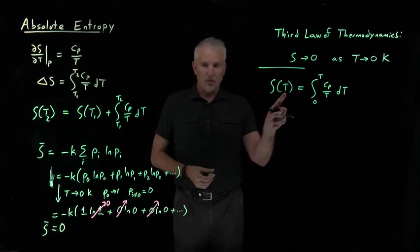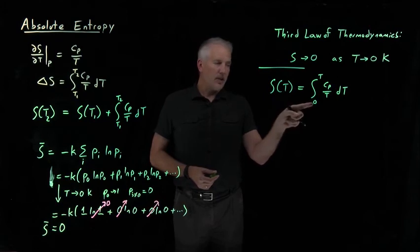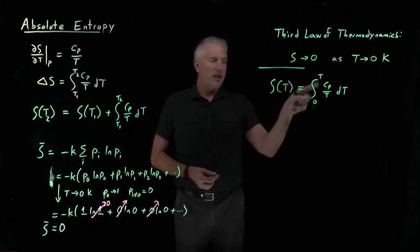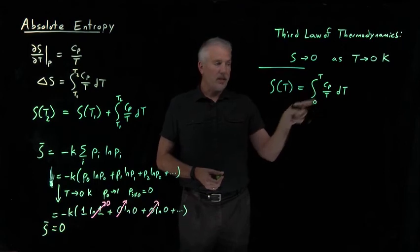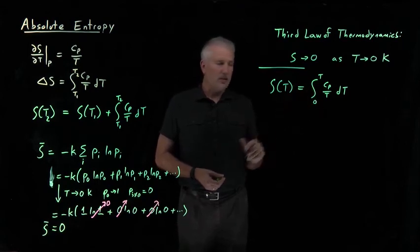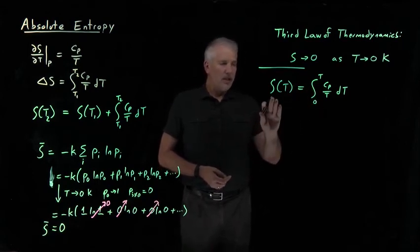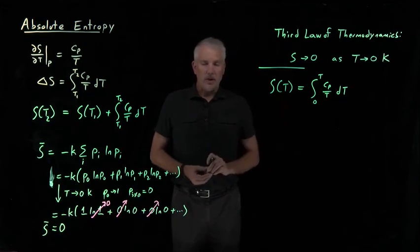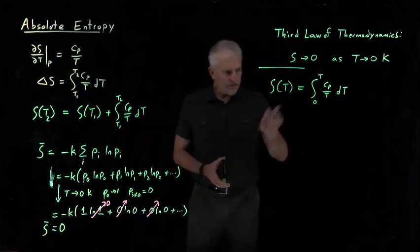but if I want to know the actual entropy, the absolute entropy, not the relative entropy, but the absolute entropy at a particular temperature T, I just have to integrate from zero all the way up to T. If I know what the heat capacity is at all the temperatures between zero and T, I can do that integral. And this tells me a way of calculating the actual entropy of that system.